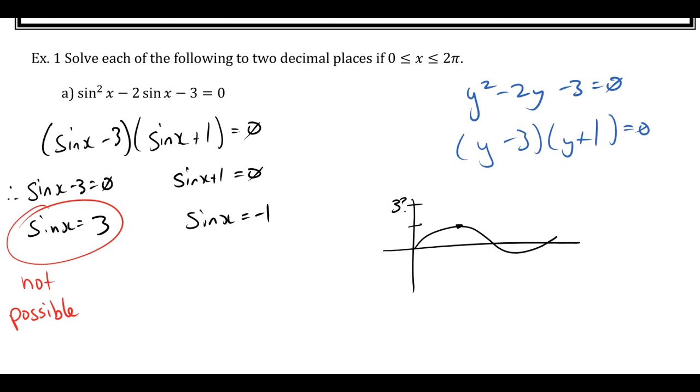Okay, so this one over here, when is sinx equal to negative 1? There it is. And so x is 3π by 2. Okay, so we got an exact answer to that one. It worked out nicely. No other answers.